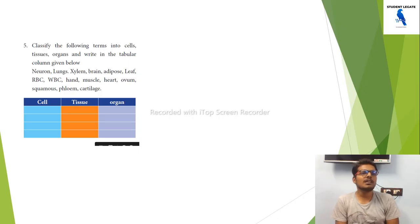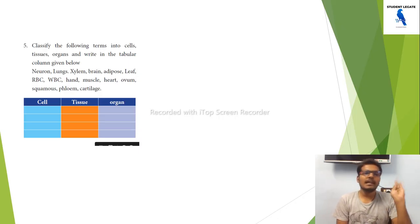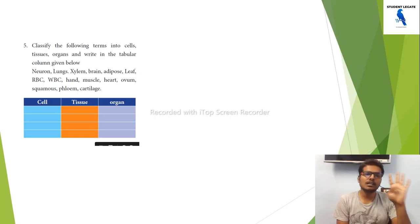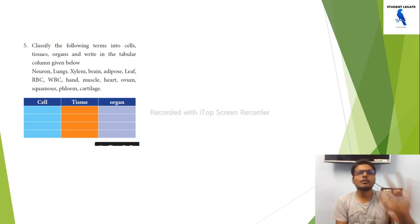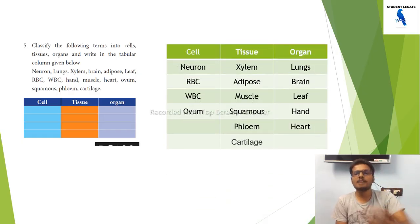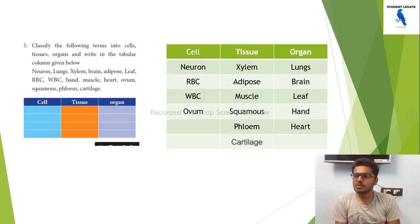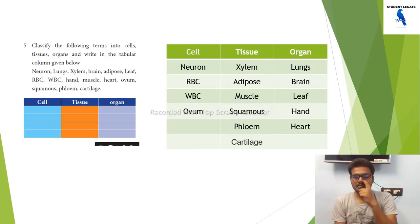Examples of organs include lungs, brain, hand, and heart. Examples of cells include neuron cell, WBC, and ovum, along with their tissues. Students, take a screenshot of this. This is useful.